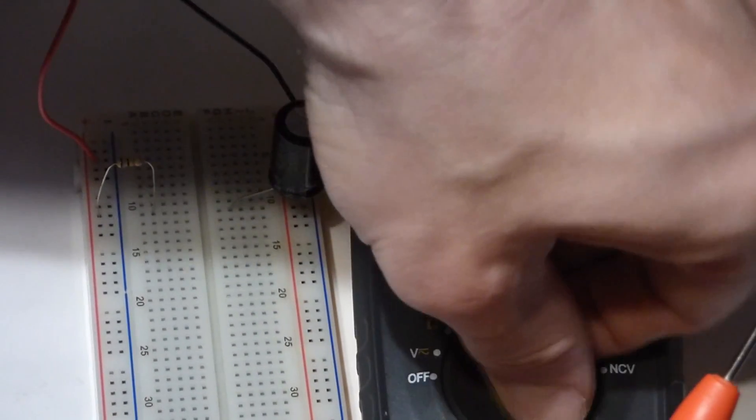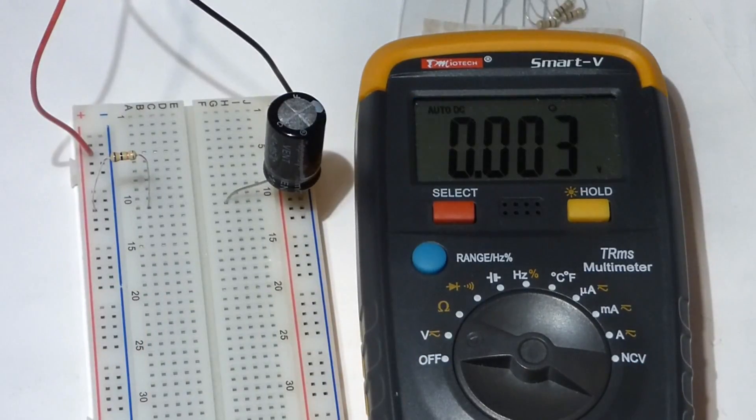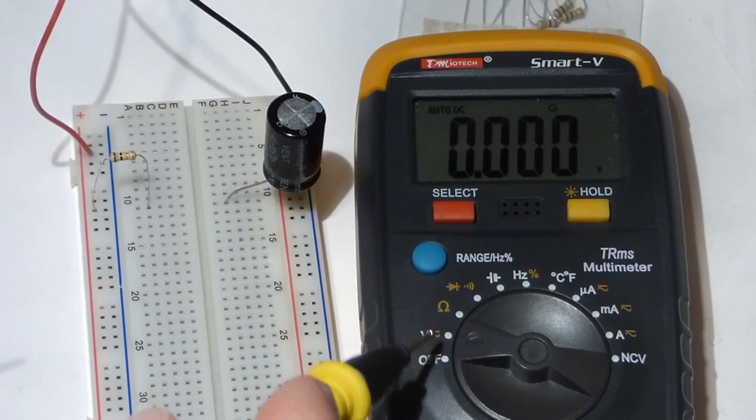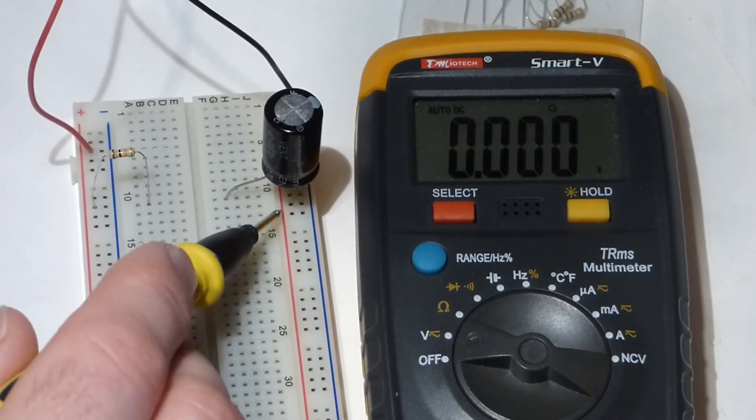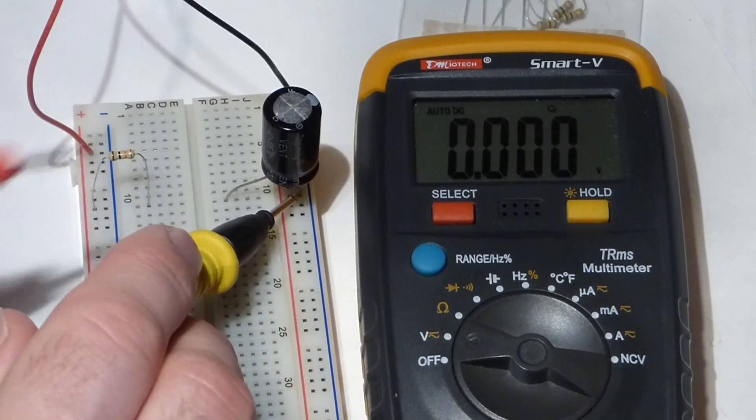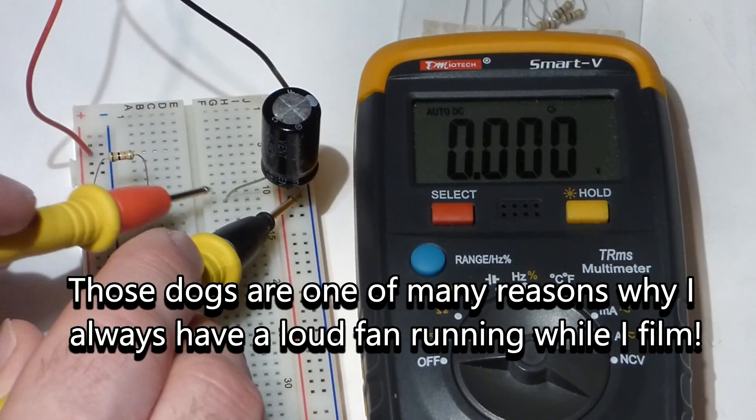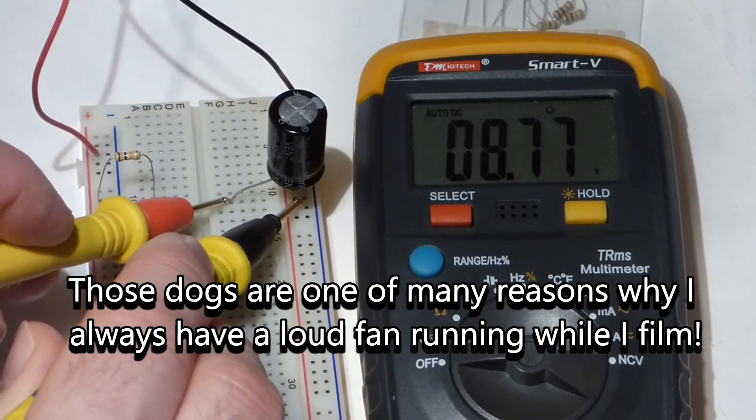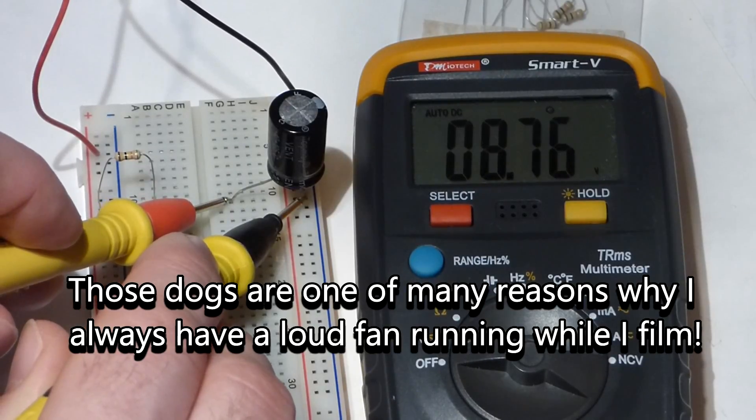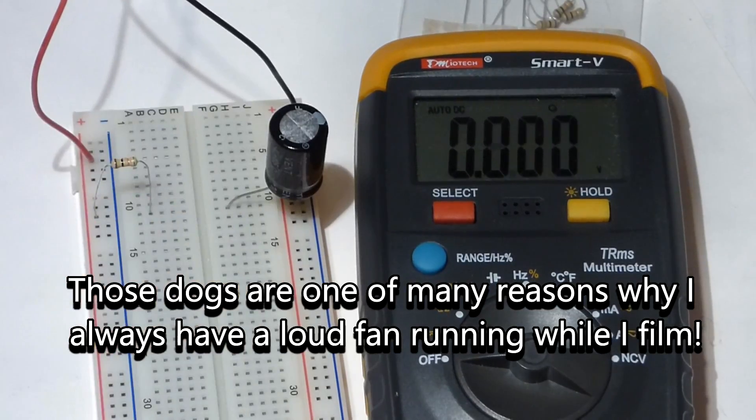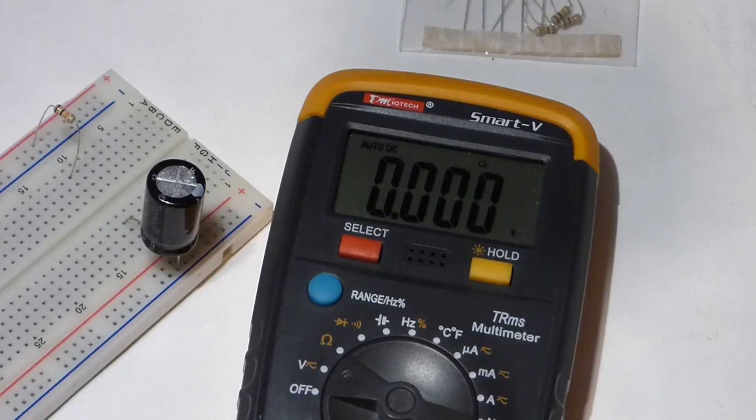Now we'll measure how charged the capacitor is by switching to voltage, because that's what the battery did. It gave the capacitor a voltage, but it had to go through the resistor, which slowed it down. And now you see we're charged to about the same voltage as the battery.